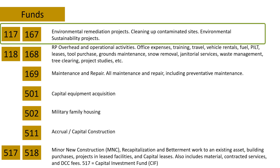Funds 117 and 167 — easy to remember because they end in 7 — deal with the environmental group. One of these funds covers environmental remediation projects, meaning we're cleaning up contamination and toxic spills. The other fund is designed to spend money on environmental sustainability projects, such as green projects.